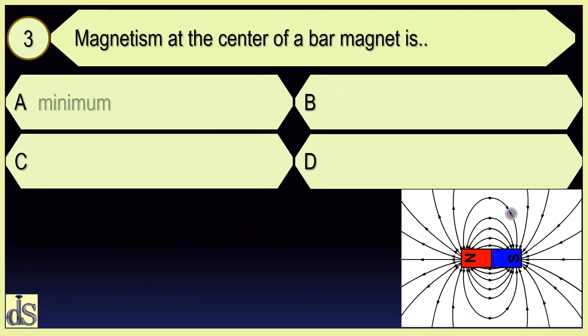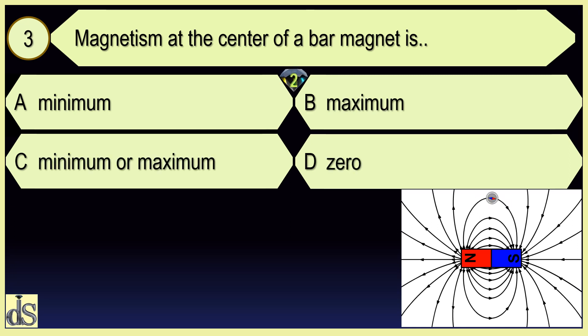Magnetism at the center of a bar magnet is zero.